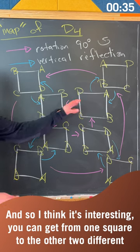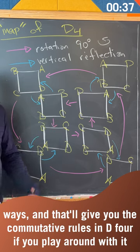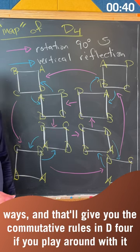I think it's interesting you can get from one square to the other two different ways, and that'll give you the commutativity rules in D4 if you play around with it.